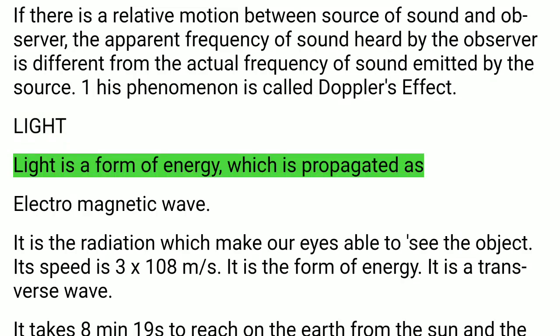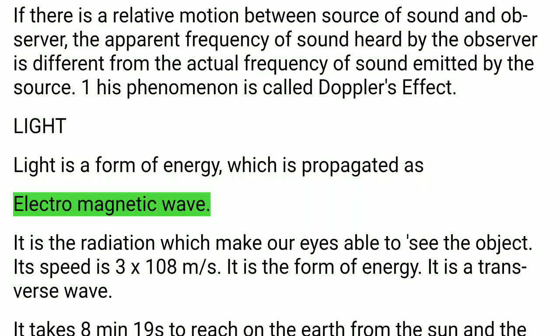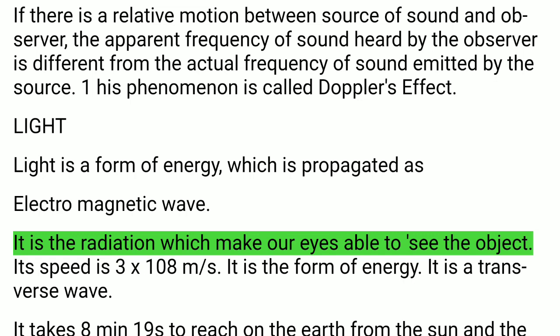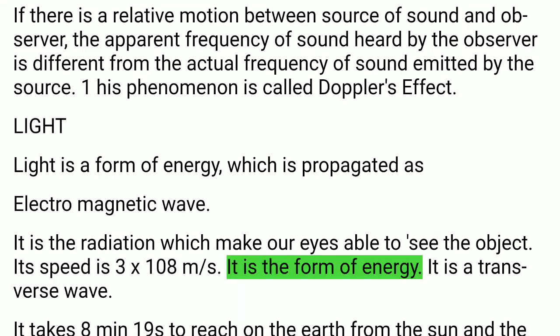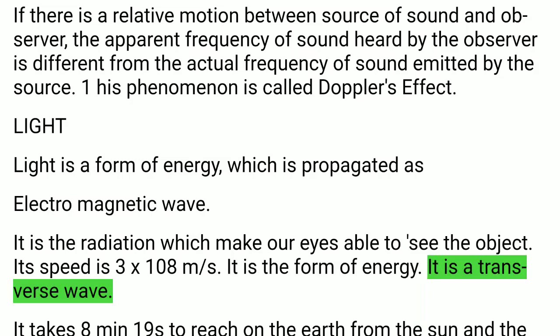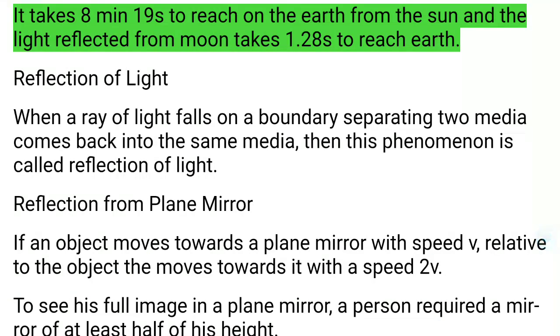Light: Light is a form of energy propagated as electromagnetic waves. It is the radiation which makes our eyes able to see objects. Its speed is 3 × 10⁸ meters per second. It is a transverse wave. It takes 8 minutes 19 seconds to reach Earth from the Sun, and light reflected from the moon takes 1.28 seconds to reach Earth.